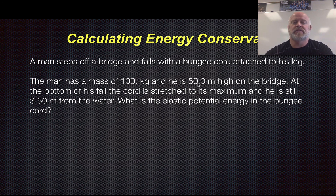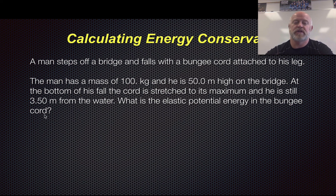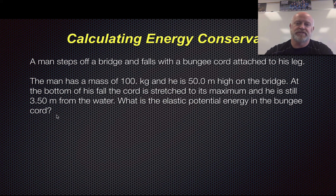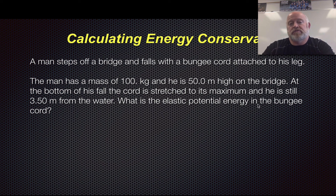A man has a mass of 100 kilograms. He is 50 meters high on a bridge. At the bottom of the fall, the cord is going to stretch to its maximum, and he is still 3.5 meters from the water. What's the elastic potential energy of the bungee cord at that point? Go back to our equation: we have initial kinetic energy, initial gravitational potential energy, initial elastic potential energy, set equal to final gravitational PE, final elastic PE, and final kinetic energy. Find your zeros, cross out all your zeros — things that are not existent at that point in time — plug in your data for the other values, and solve. Pause the video here, go ahead and work through it and try to solve it.